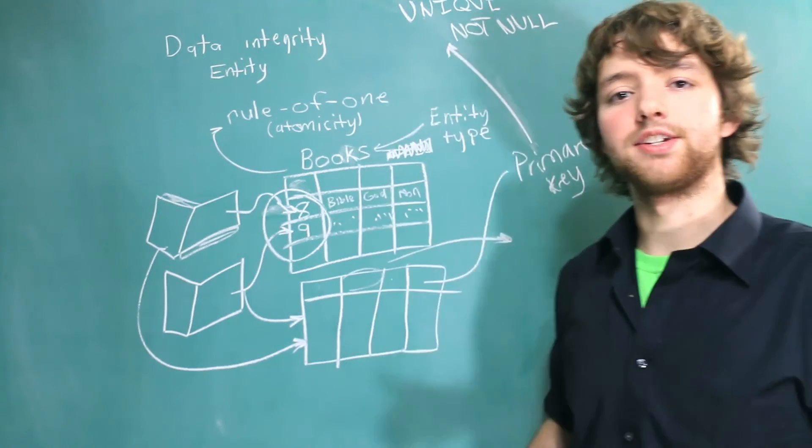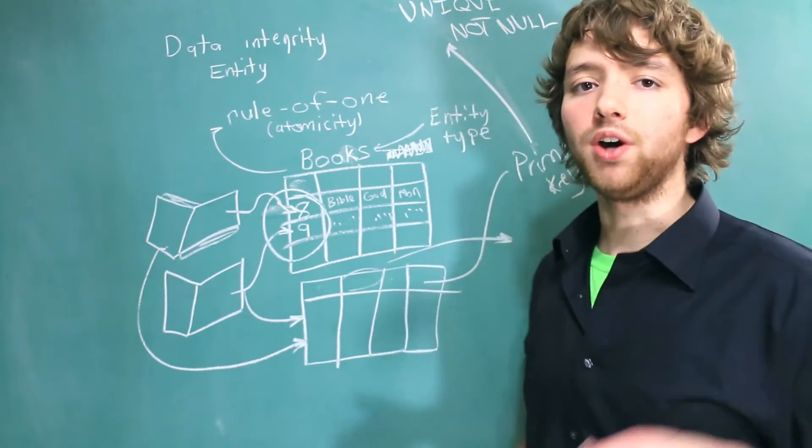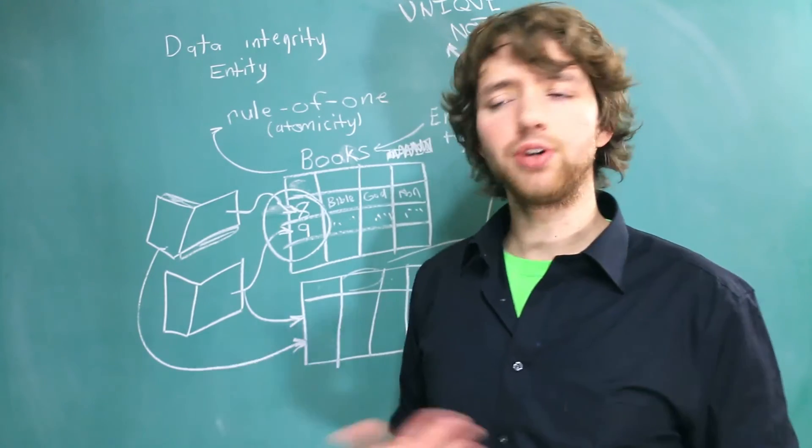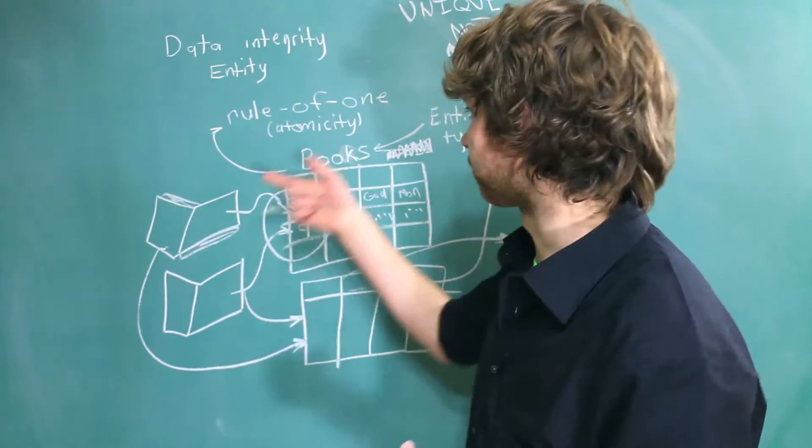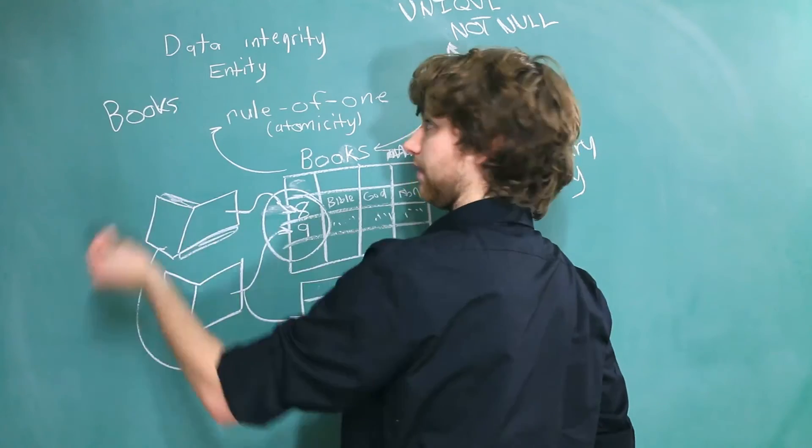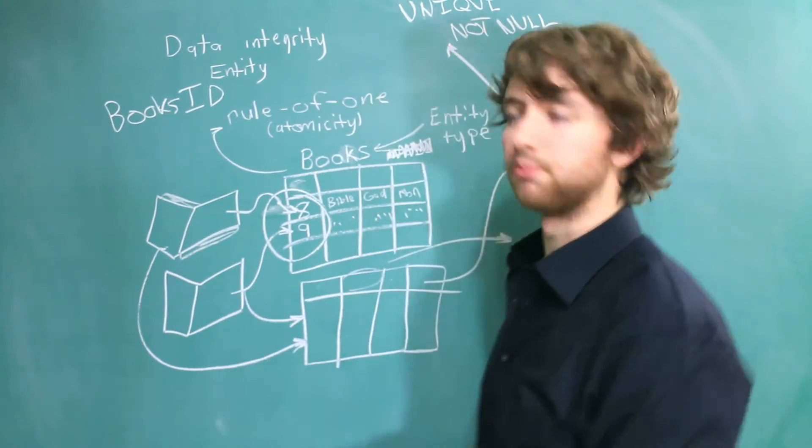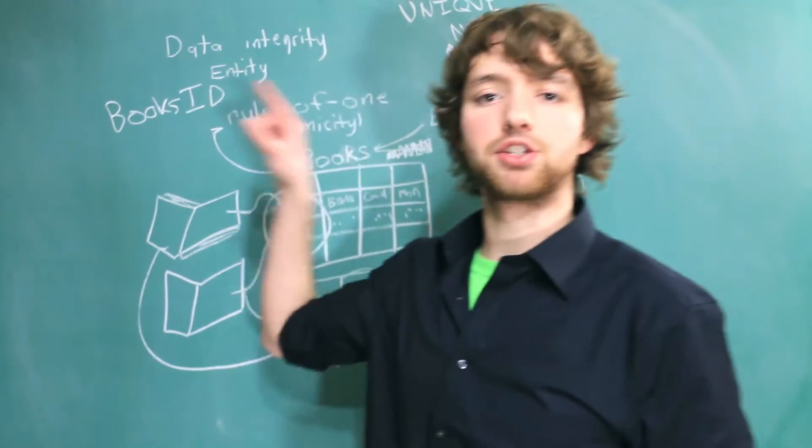So entity integrity revolves around primary keys. That's what it's about. To get entity integrity, you need to make sure every table has a primary key. Now if you don't know what to use as a primary key, just create one. Say, whatever the table is called. Let's say, books ID. So simple. If you're trying to store books, give it an ID of books ID. Boom. That simple.